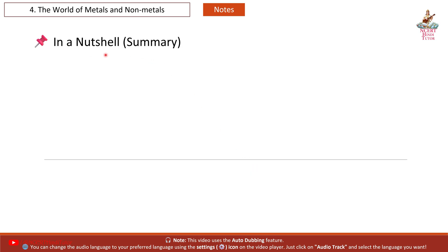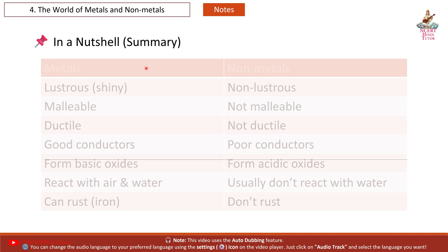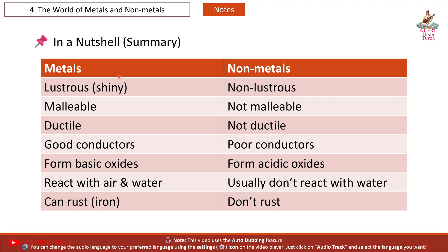Summary — Metals: Metals are lustrous and shiny, malleable, ductile, good conductors, form basic oxides, react with air and water, and can rust, like iron.